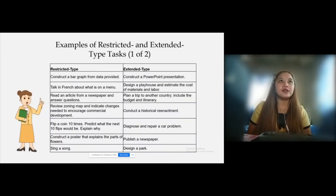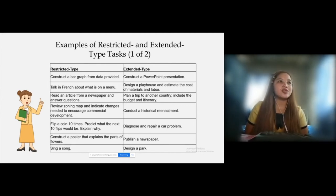Here are examples of restricted and extended type tasks. In restricted type, students will construct a paragraph from the data provided, talk in French about what is on the menu, read an article from a newspaper and answer questions, review a zoning map, and indicate changes needed to encourage commercial development.